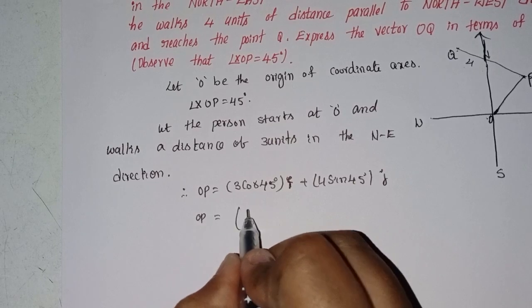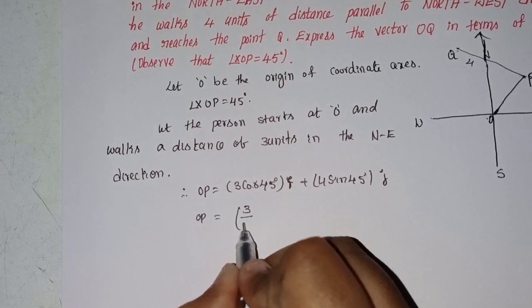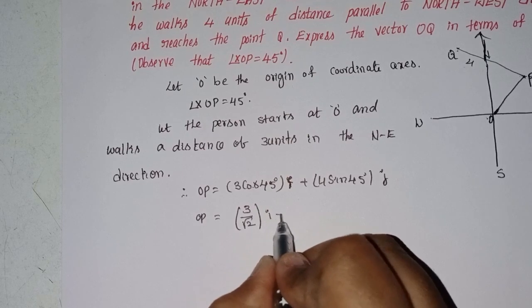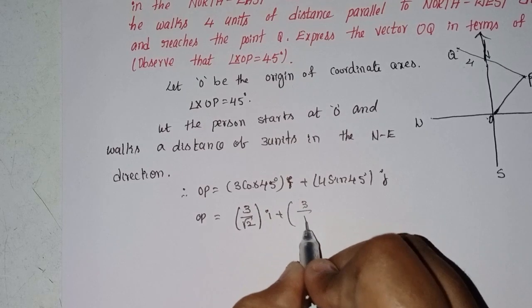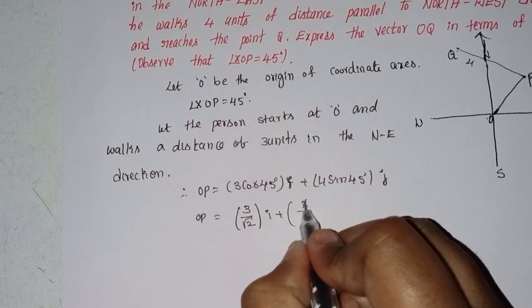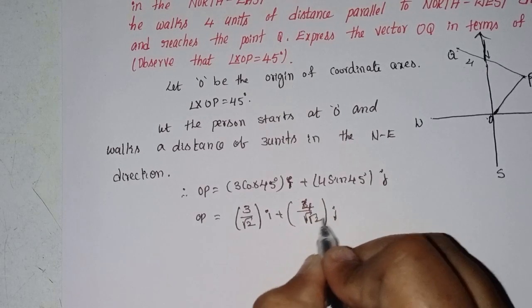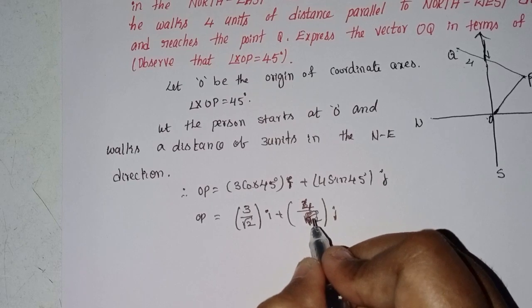Therefore, OP equals 3 into cos 45 degrees. Since cos 45 degrees is 1 by root 2, this gives us 3 by root 2 into i, and similarly 3 by root 2 into j.